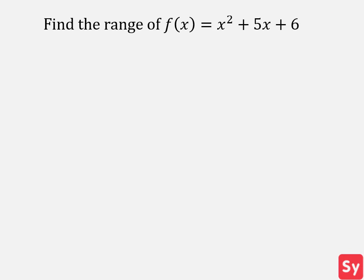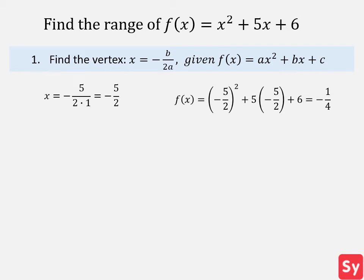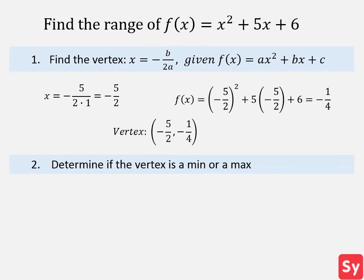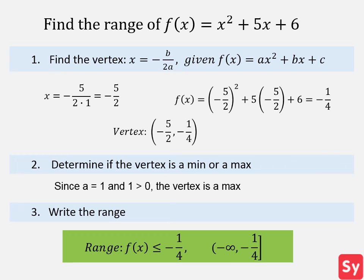Next example: find the range of f(x) equals x squared plus 5x plus 6. Since we are finding the range of a quadratic function, first we need to find the vertex. We find the x-coordinate first by plugging in the respective values, then we plug the x-coordinate into the function to get the corresponding y-coordinate. So our vertex is at negative 5 halves, negative 1 fourth. Second, we determine if the vertex is a min or a max by looking at the value of a. In this case, a equals 1, and since 1 is greater than 0, the vertex is a max, so the parabola opens down. Finally, we write the range: f(x) is less than or equal to negative 1 fourth.